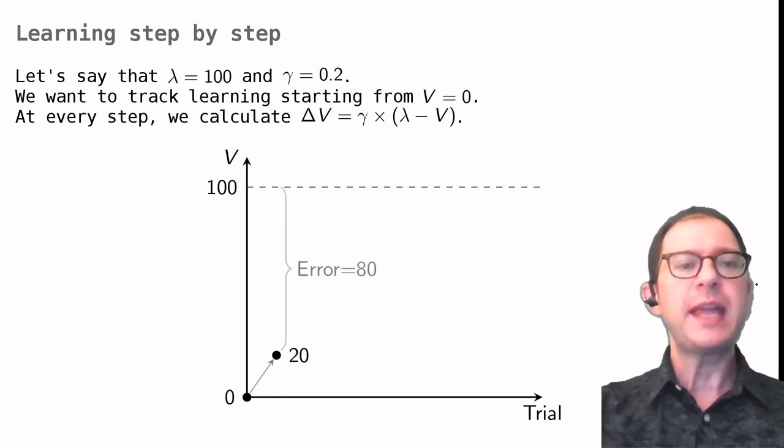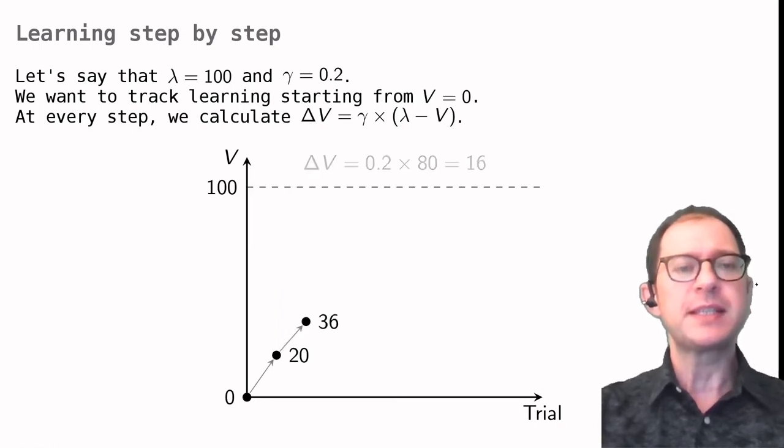At this point, the error is 80. If we redo the calculations, we have 0.2 times 80 equals 16, which means that the associative strength V will jump by another 16 units. And so, our total for now is 36.